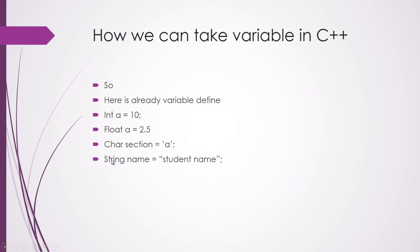Here is a string data type: name equal to "students name" — we are storing that string in double quotes into the name variable. So for that we choose the string data type. In the next video I will show you how to write a variable in a real practical example in a code editor.